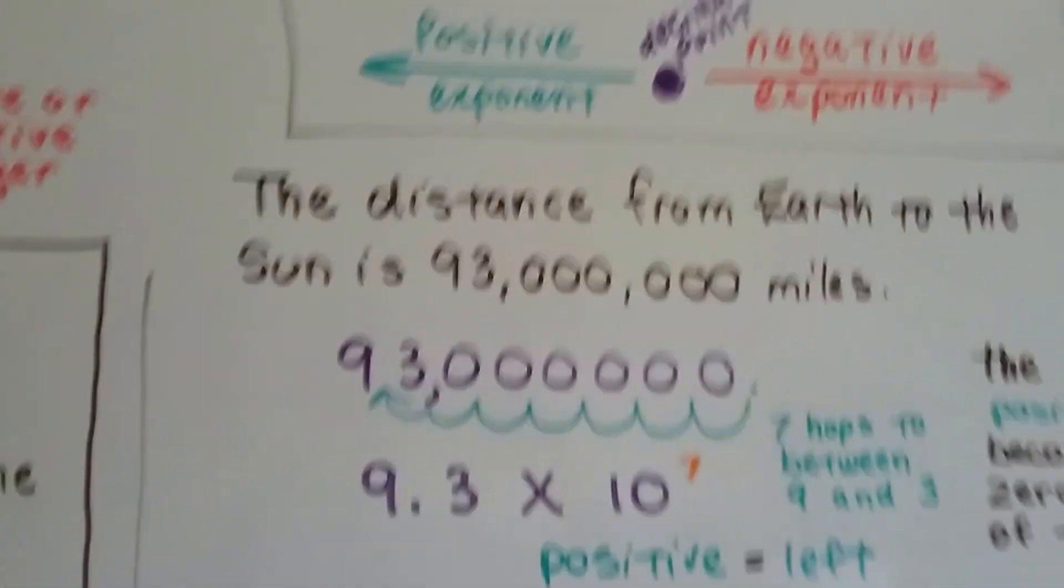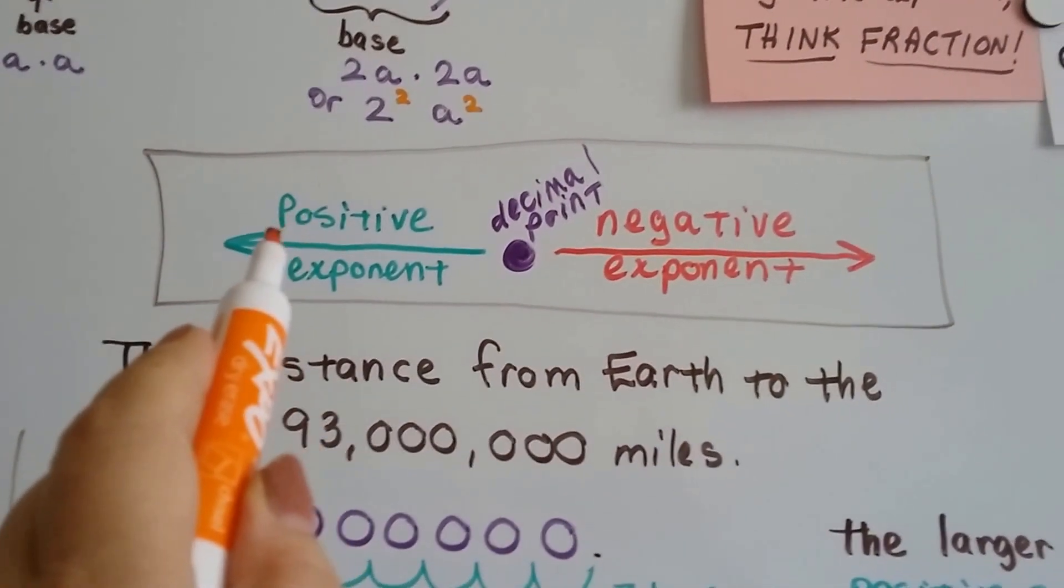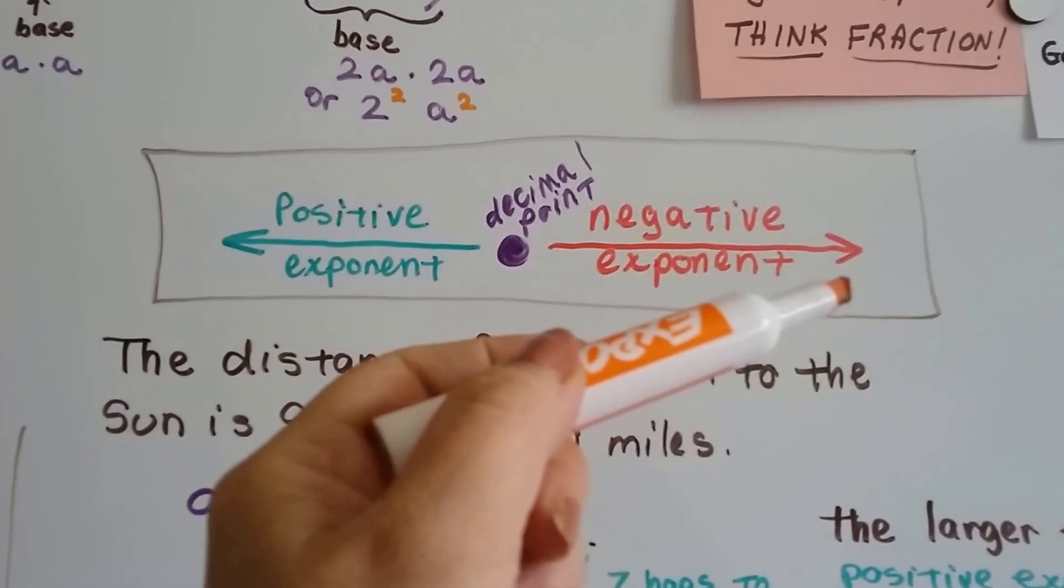The way to look at it is, here's our decimal point. The positive exponent is going to be when we're going this way, and a negative exponent is going to be if we're heading this way at the decimal point.